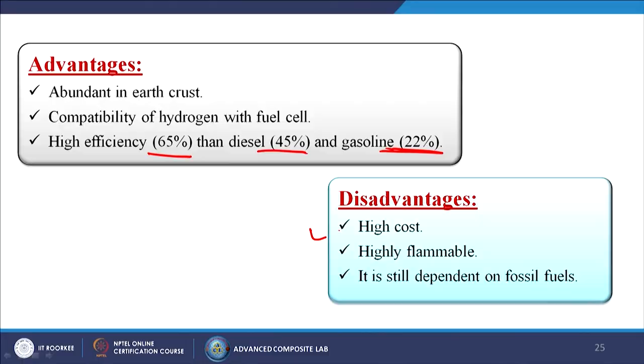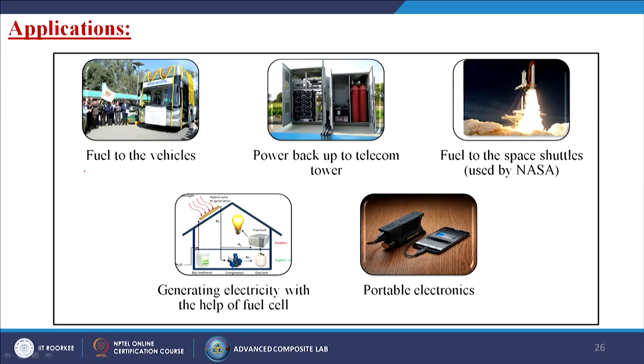There are certain disadvantages: it is high cost to store hydrogen, it is highly flammable, it needs the highest precautions, and it is still dependent on fossil fuels itself. Applications — nowadays people are using hydrogen for enormous applications, but storing hydrogen is a bit difficult. Still research is going on, and in the near future we will be able to store 100 percent hydrogen and use it as fuel for future applications. Applications include fuel for vehicles — buses running on hydrogen, power backup to telecom towers, fuel for space shuttles — NASA uses this technology — generating electricity with hydrogen fuel cells, and portable electronics.